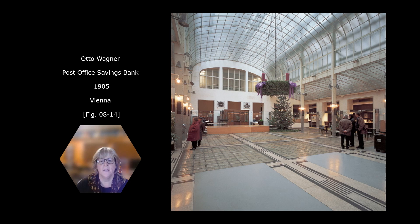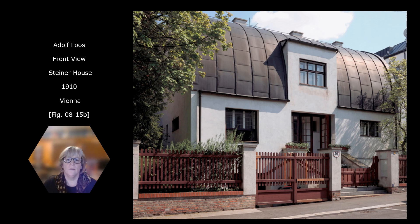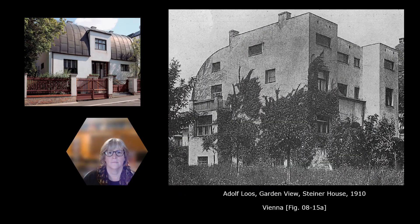Adolf Loos was an architect who followed the same principles as Wagner and Sullivan. What made Adolf Loos noticeable is his use of the barrel vaulted roof, as seen in this image of the Steiner House that he designed in 1910, located in Vienna, Austria. There is no fancy decorative ornamentation seen here. This view is important because it shows the true size of the Steiner House, which is deceiving when looked at from the front. Take note of the barrel vaulted roof, which is only in the front.